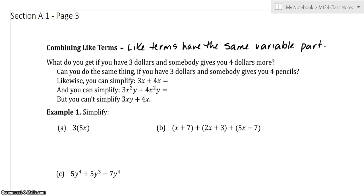Like terms have the same variable part raised to the same powers. So what do you get if you have three dollars and somebody gives you four dollars? We know three dollars plus four dollars is seven dollars. Can you do the same thing if you had three dollars and somebody gives you four pencils? No. You would not have seven dollar pencils. You would have three dollars and four pencils. They are not like terms.